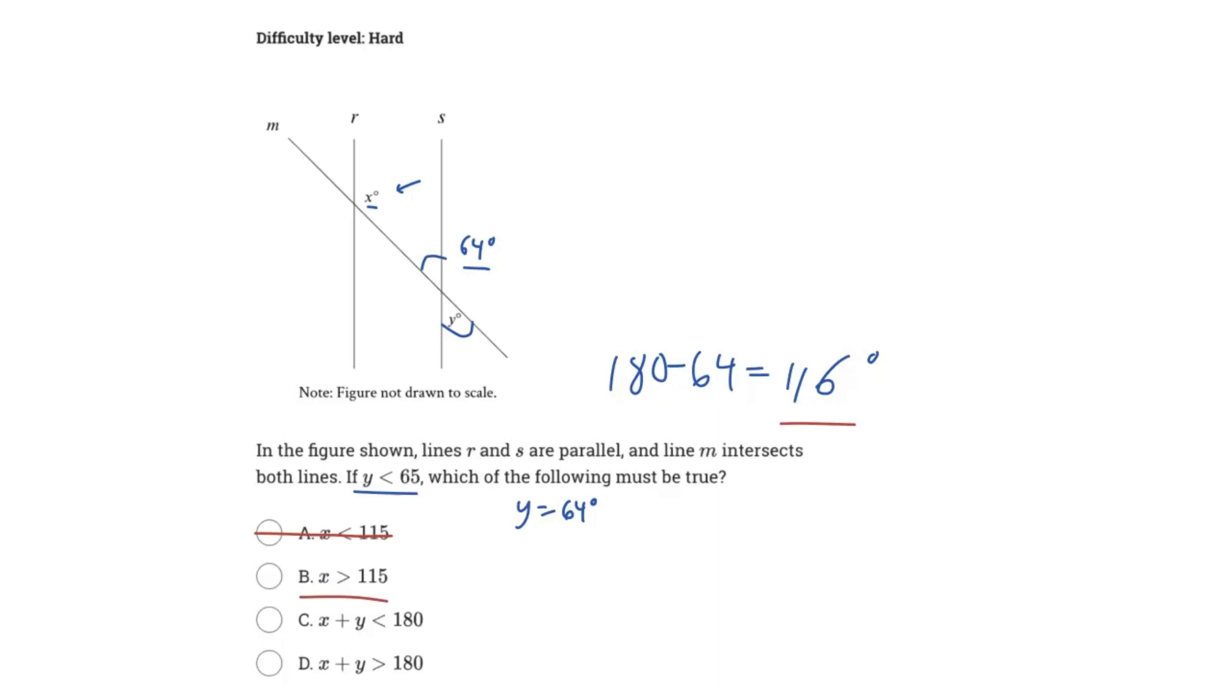Well, we know that the biggest value of Y that we can have is 65 or not even 65, because it can't even be equivalent to it. It would have to be like 64.999. And therefore, if we had 180 minus 64.999, et cetera, right? That would yield 115.00001, right?